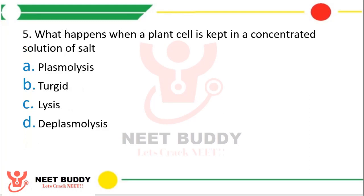Question 5: What happens when a plant cell is kept in a concentrated solution of salt? Option A: plasmolysis, option B: turgid, option C: lysis, option D: deplasmolysis. The correct answer is option A, plasmolysis. A concentrated salt solution refers to a hypertonic solution, and when a plant cell is kept in a hypertonic solution, it undergoes plasmolysis.